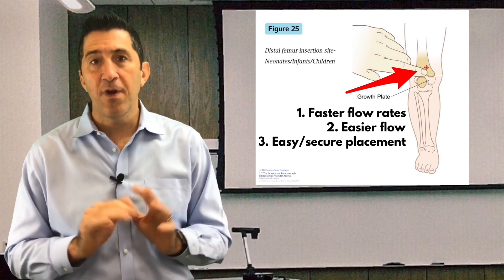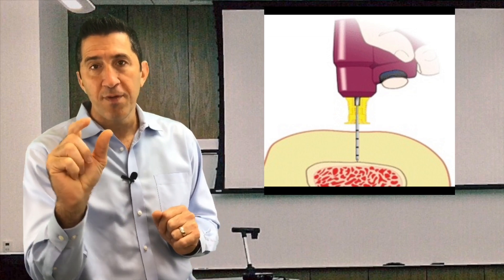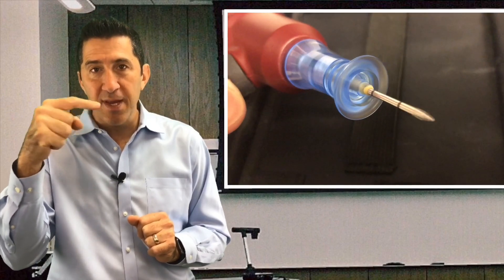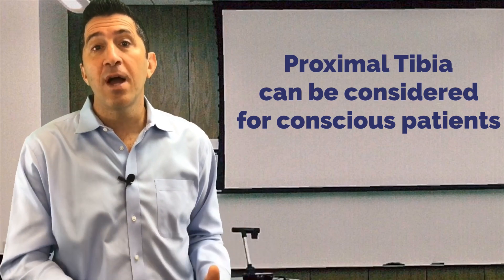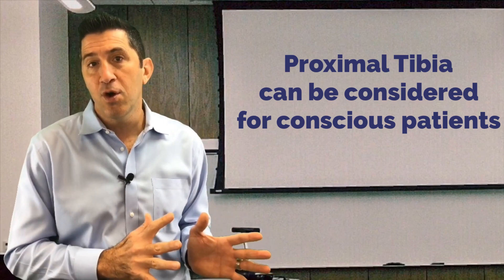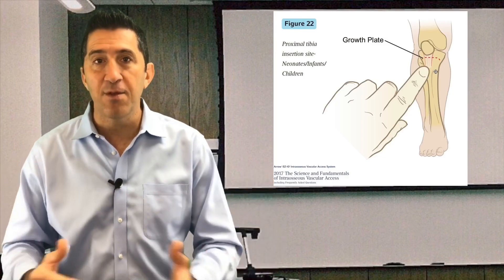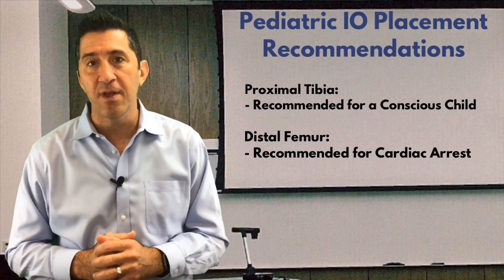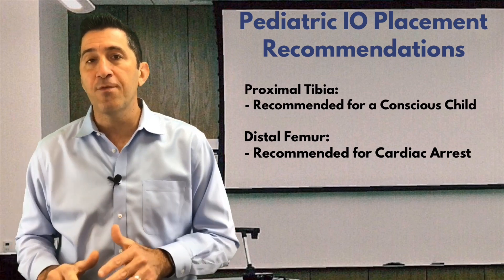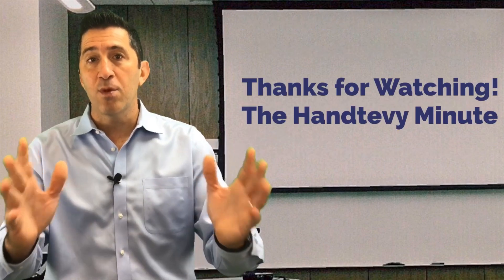One important caveat: the femoral tissue — you're going through some skin and some muscle. So as that needle is spinning, if the child is conscious, it's going to hurt. We would not advise a femoral IO in a conscious child. We would advise you to go to the proximal tibia in a conscious child — for example, if the child was septic and needed fluids, or hypoglycemic and needed dextrose, and you couldn't get an IV. The distal femoral IO should be for the unconscious child in cardiac arrest, and it's very successful. We would advise you to use that.